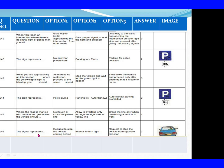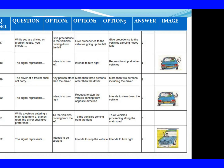Question 146: The sign represents. Option 1: Request to stop the vehicle coming behind. Option 2: Intends to turn right. Option 3: Request to stop the vehicle from the opposite direction. The right answer is Option 2: Intends to turn right. Question 147: While you are driving on a ghat road, you should. Option 1: Give precedence to the vehicle coming down the hill. Option 2: Give precedence to the vehicle going up the hill. Option 3: Give precedence to the vehicle carrying heavy load. The right answer is Option 2: Give precedence to the vehicle going up the hill.